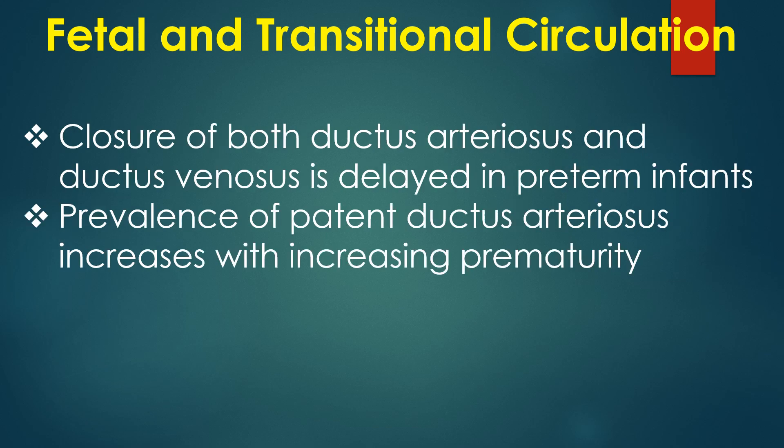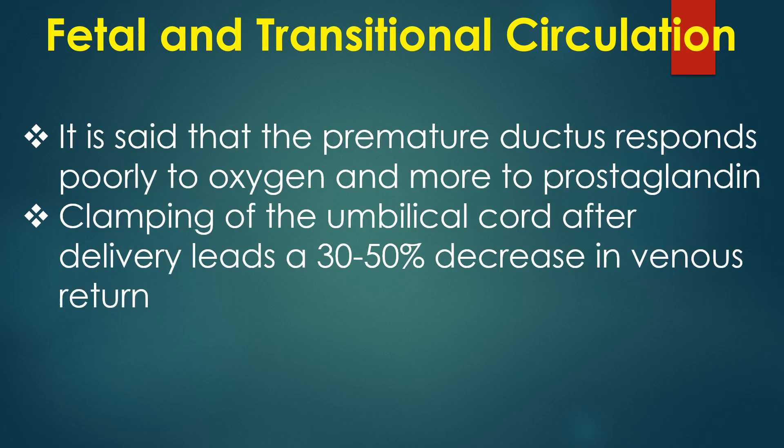Closure of both ductus arteriosus and ductus venosus is delayed in preterm infants. Prevalence of patent ductus arteriosus increases with increasing prematurity. The premature ductus responds poorly to oxygen and more to prostaglandin. Clamping of the umbilical cord after delivery leads to a 30 to 50% decrease in venous return.